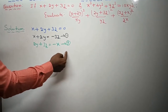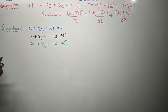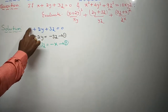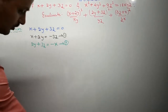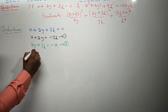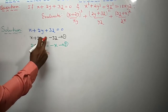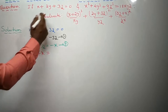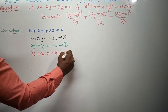Similarly, the second term has 2y plus 3z. From the given equation, transfer x to the right side: 2y plus 3z equals minus x. This is equation number 2. For the third term, 3z plus x: transfer 2y to the right side, so 3z plus x equals minus 2y. This is equation number 3.